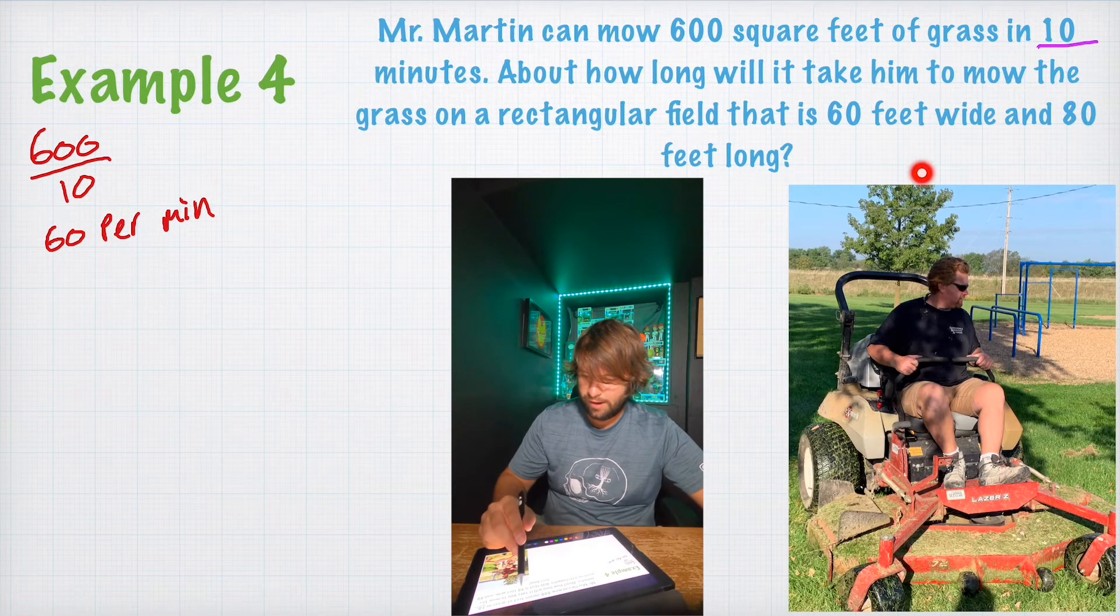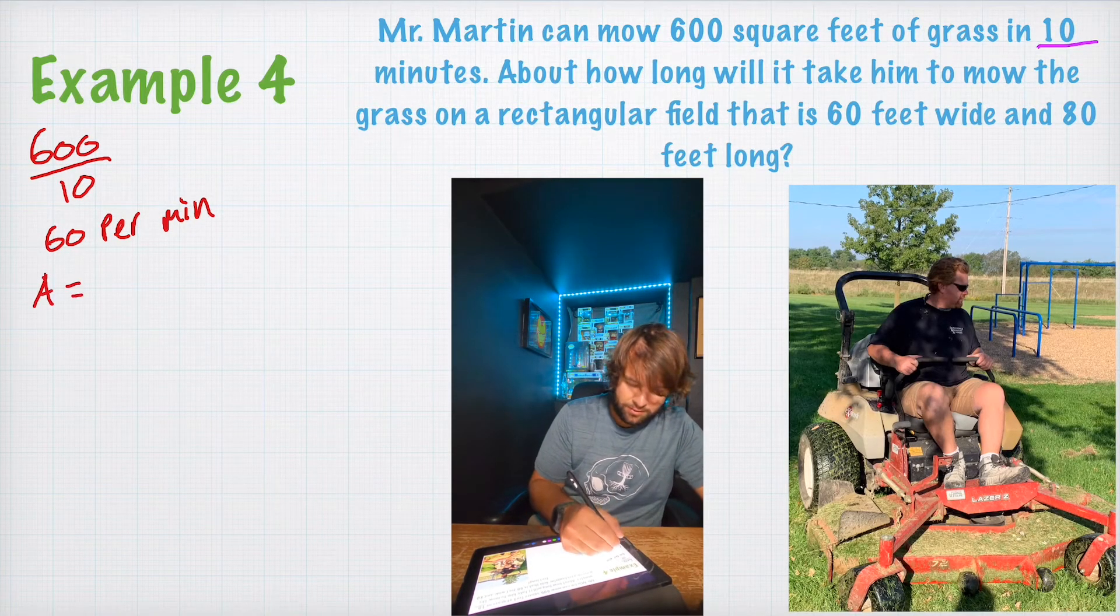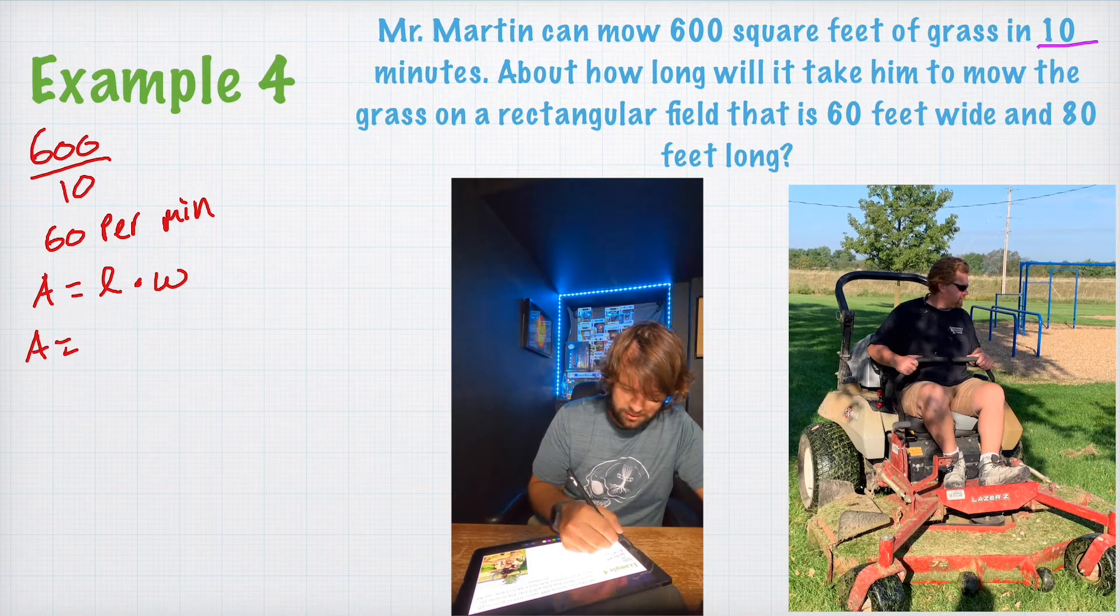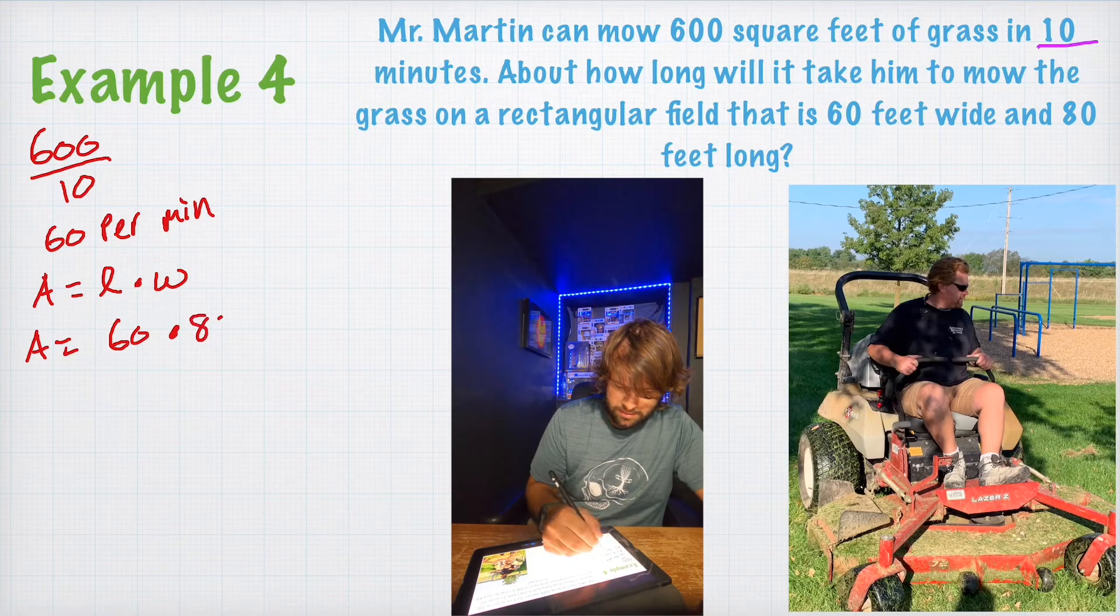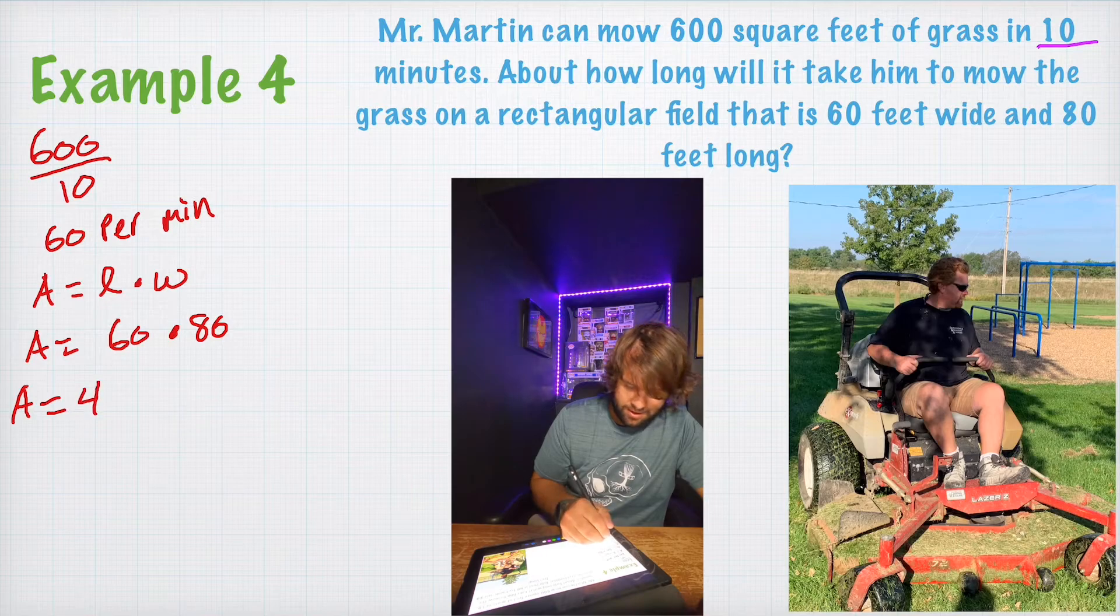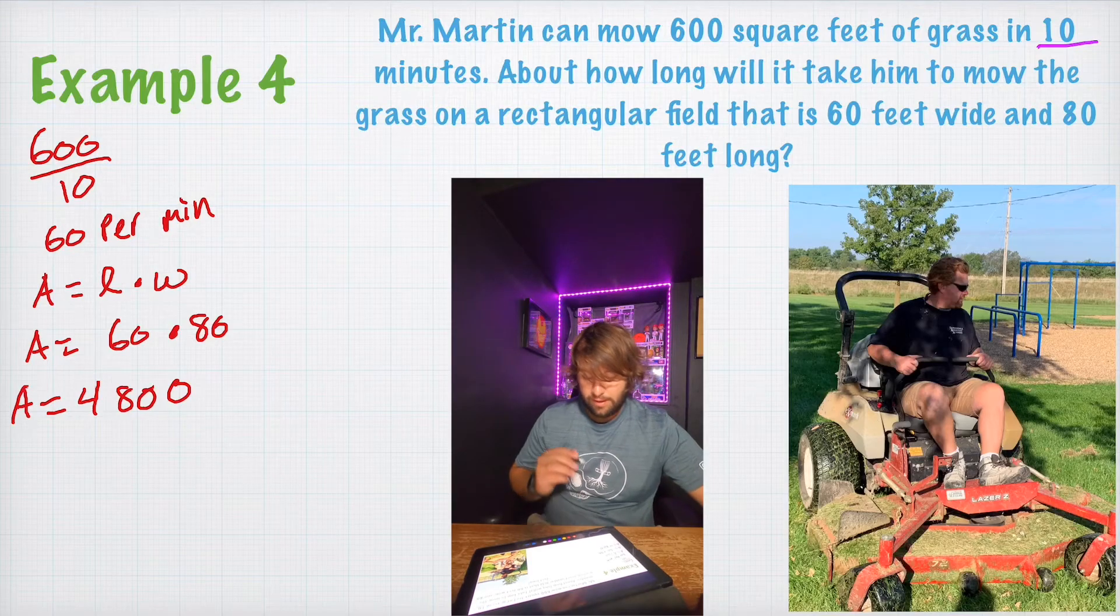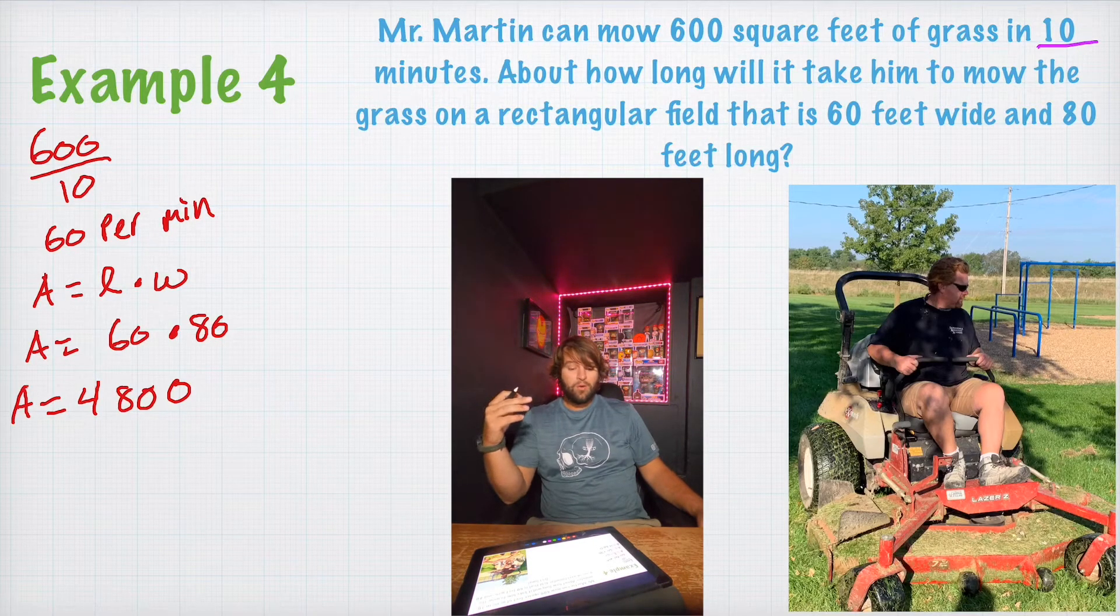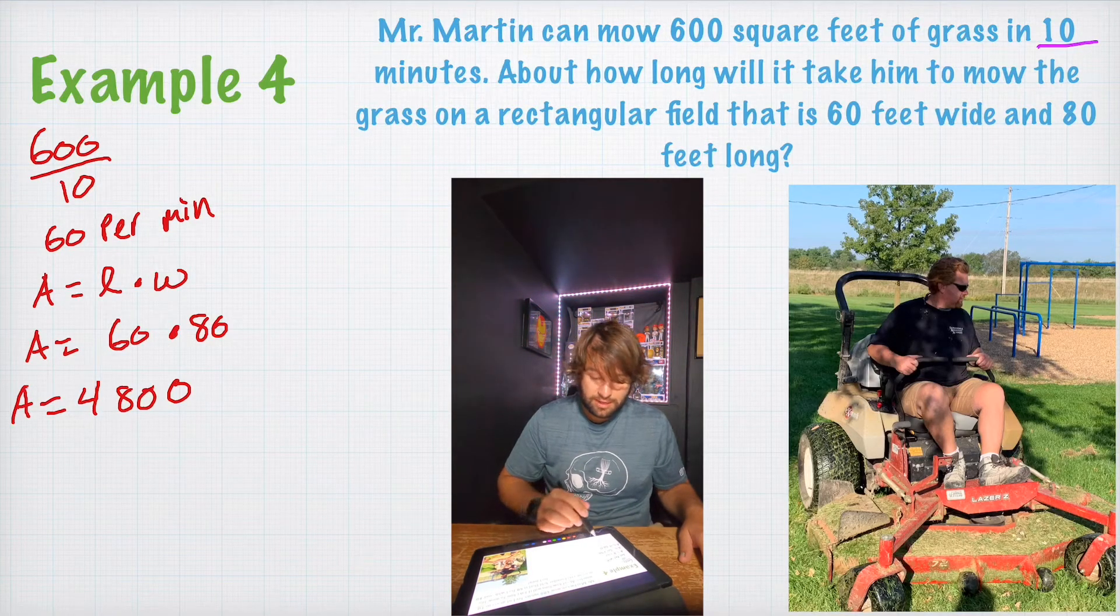Now, we need to find out the total area of the field that he is mowing. So, area of a rectangle, area equals length times width. So, area is going to equal 60 times 80. Punch it in. Area equals 4,800 feet. Now, we know that it's 4,800 square feet and he can mow 60 square feet per minute. So, now we just need to know how long it's going to take him total.